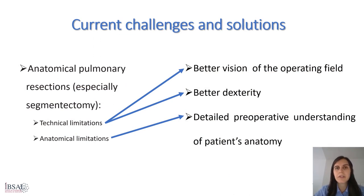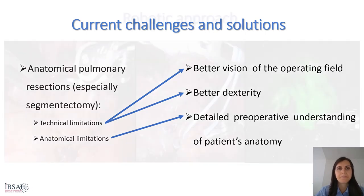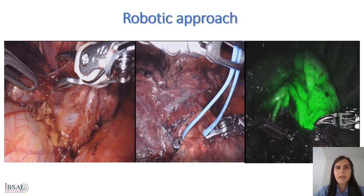Anatomical pulmonary resection and especially segmentectomies can be challenging procedures due to technical and anatomical limitations. We consider that these limitations should be overcome with a better vision of the operating field, better dexterity of the surgeon, and tailored knowledge of the patient's anatomy. In this regard, robotic technology brings 3D vision and better dexterity to the surgeon, making operations much easier to perform.